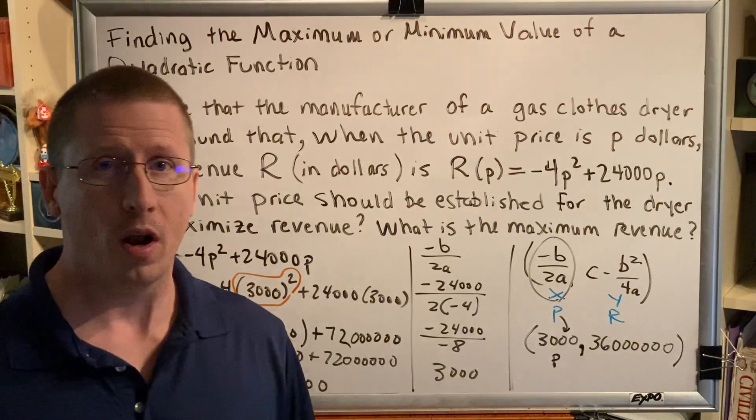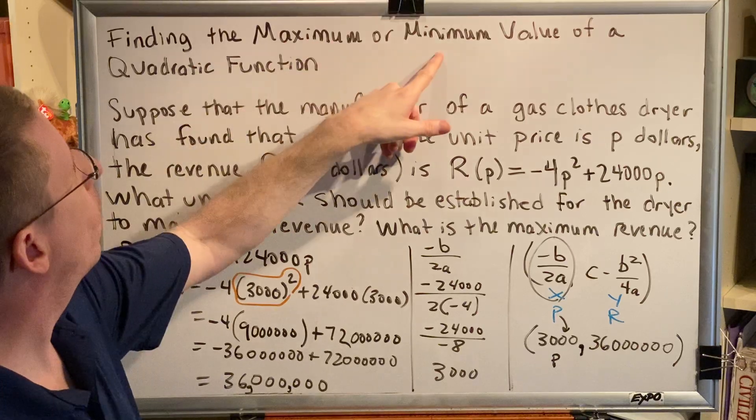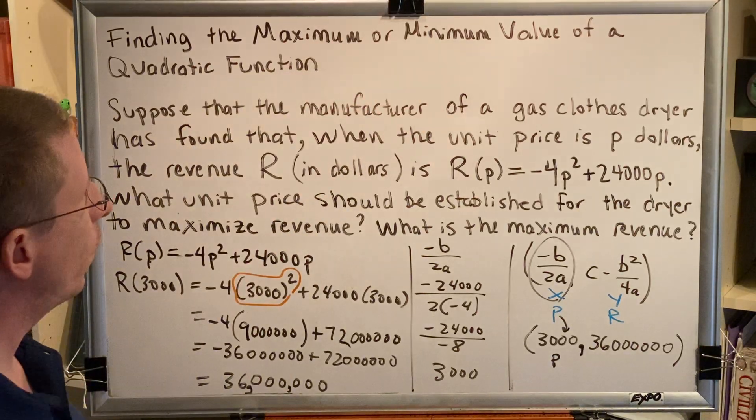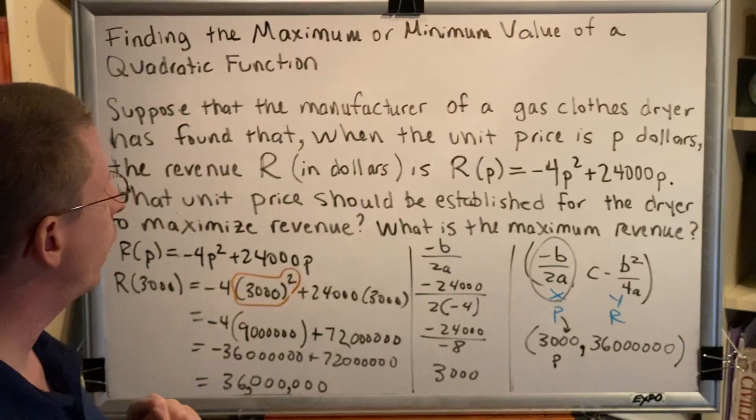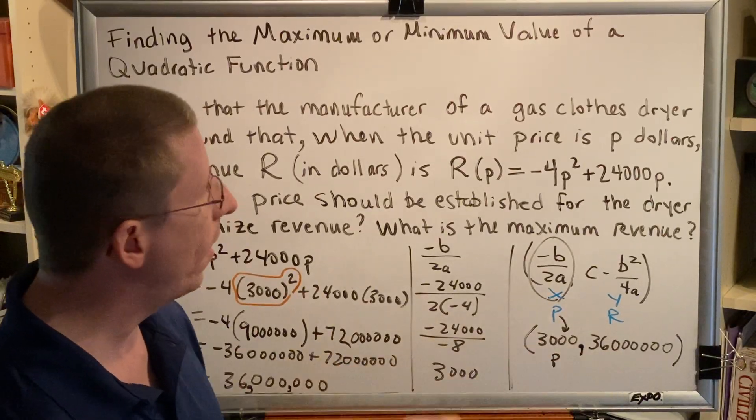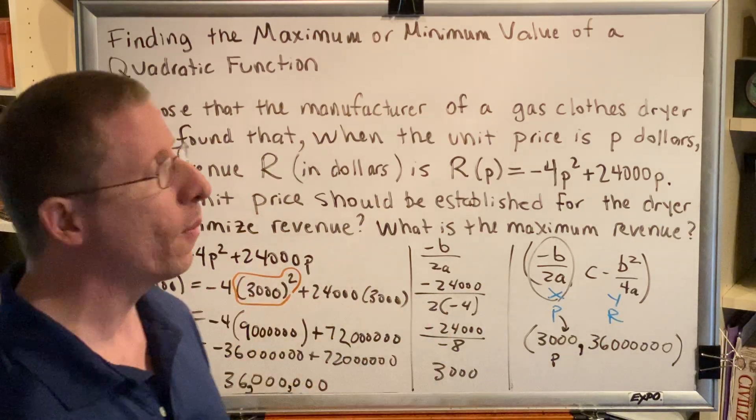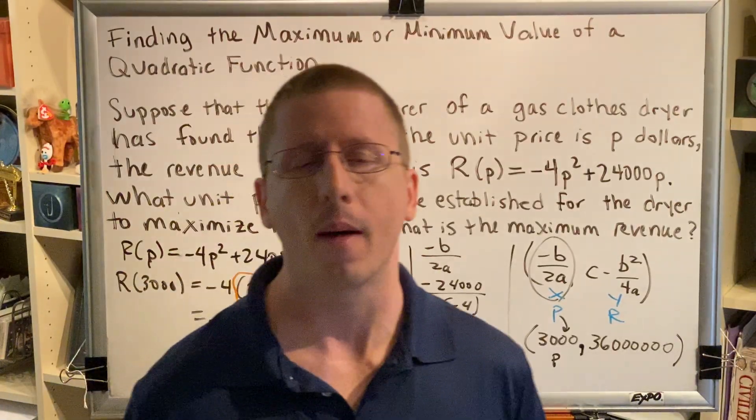Okay, let's just briefly summarize. Whenever you are dealing with a quadratic function and you see minimum or maximum, that means you're looking for the vertex. This is the formula for the vertex, and when you plug in, you're going to get two coordinates, an x and a y. They both have meaning, so it's really important that you understand which one represents which thing for any problem that you are solving.